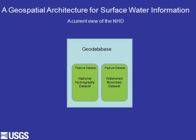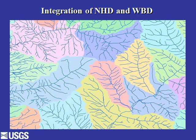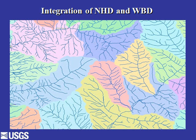Our basic architecture for this dataset is a geodatabase that consists of the National Hydrography Dataset and the Watershed Boundary Dataset. When we display those together, the blue lines are the National Hydrography Dataset — the streams that make up the surface water network — and the multicolored polygons make up the Watershed Boundary Dataset. We can see how these stream networks neatly fit within these hydrologic drainage areas.